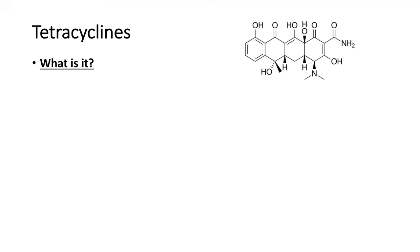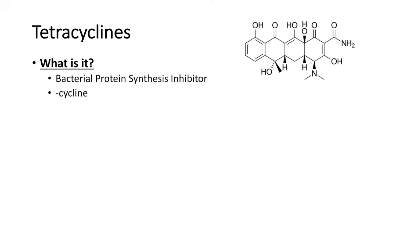So what are tetracyclines? Tetracyclines are actually a class of broad-spectrum antibiotics that act as bacterial protein synthesis inhibitors. Tetracyclines are a group of antibiotics which include something known as tetracycline, as well as other antibiotics with 'cyclin' at the end of their name. So an antibiotic with 'cyclin' at the end of its name is a tetracycline. Tetracyclines all have very similar chemical structures, as shown here, with a few different modifications.